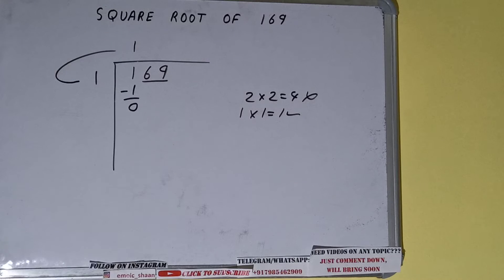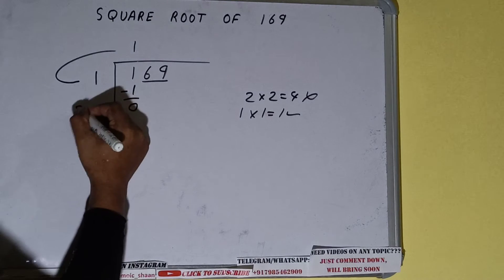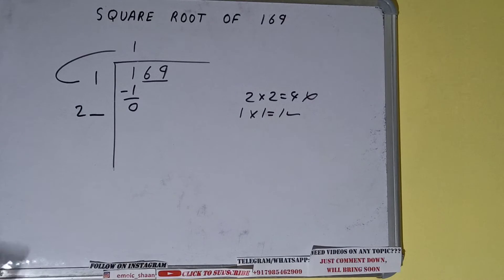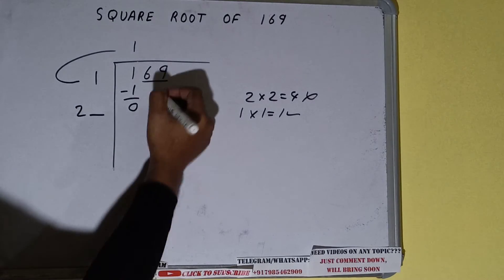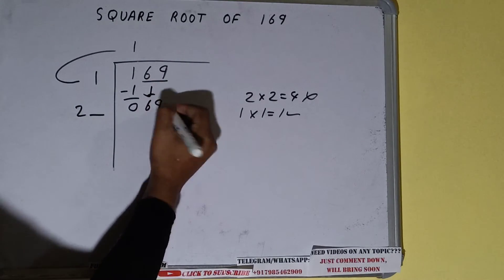So 1 plus 1 will be 2, we write it here and keep one digit extra and this number we need to make it big. So bring the next pair down and it will become 69.